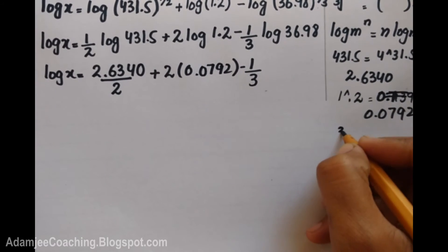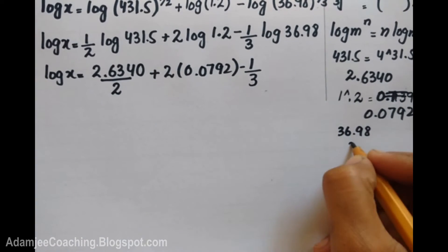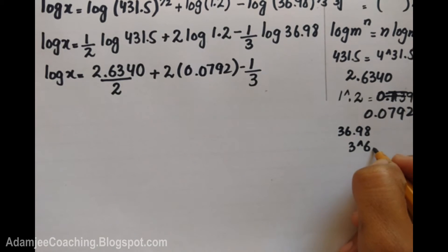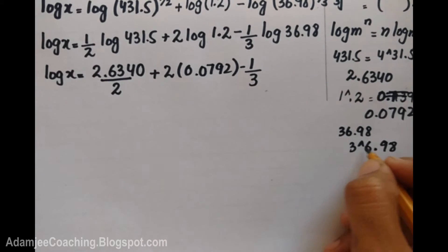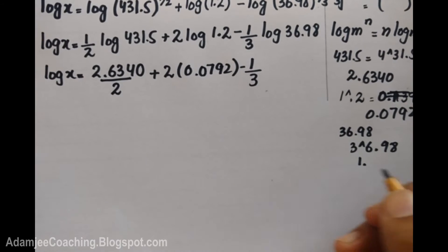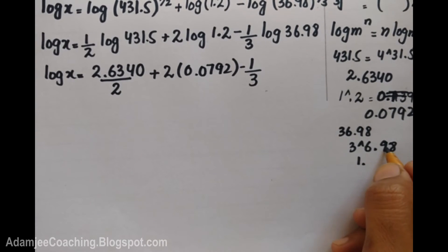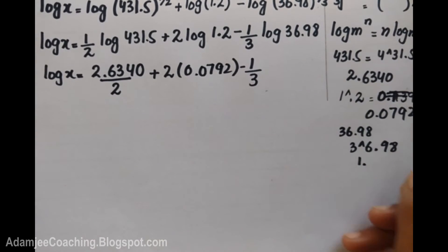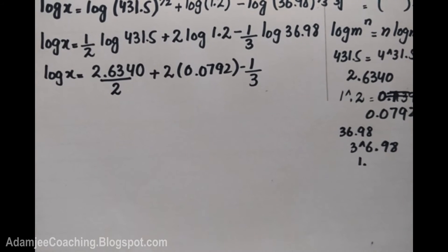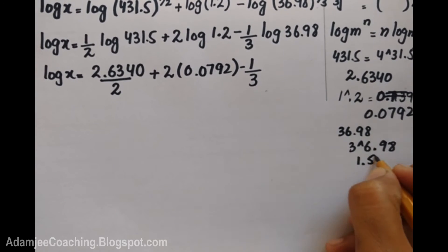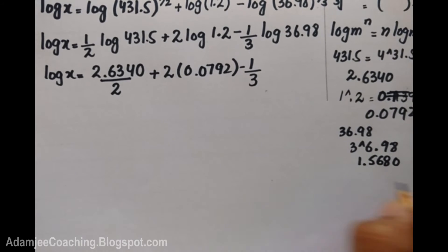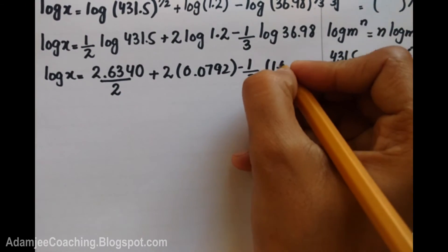For log 36.98: the reference point is one digit, so the characteristic is positive 1. Checking row 36, column 9 and mean difference 8, the mantissa value is 5680. So log 36.98 equals 1.5680, and divided by 3 gives 0.5226.